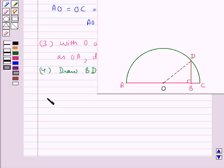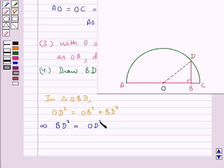Now consider this triangle OBD. This is a right angle triangle. So we apply Pythagoras theorem and we have OD square is equal to OB square plus BD square. This means BD square would be equal to OD square minus OB square.